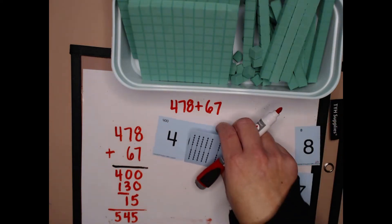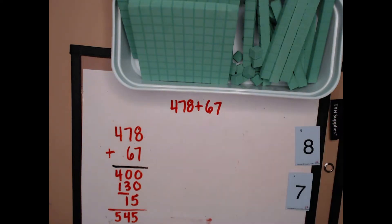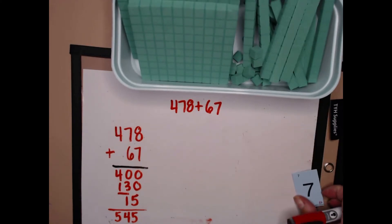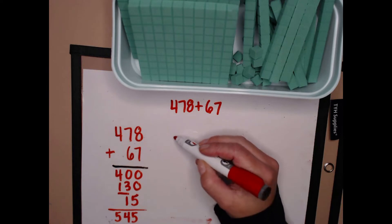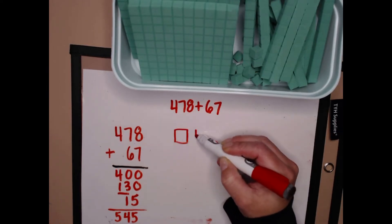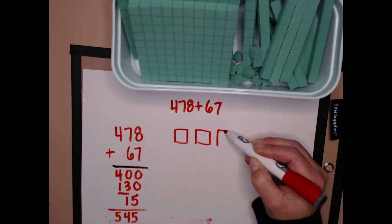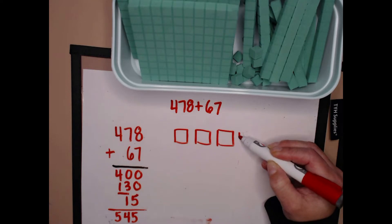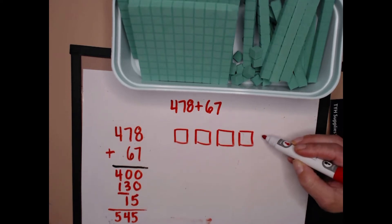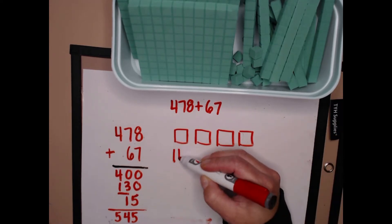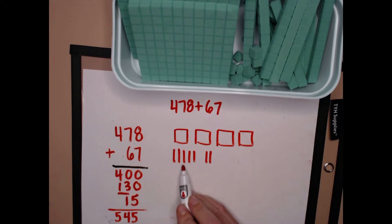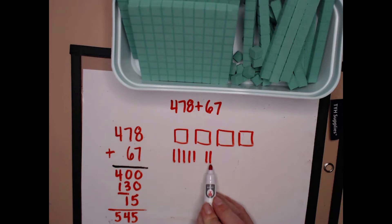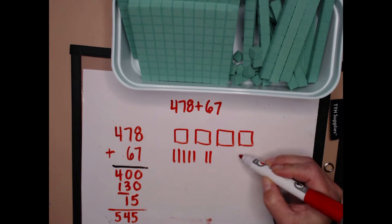Next I'm going to do a proof picture. I have four hundred seventy-eight. I have four hundreds, seven tens — notice I did five tens and then I pause, give a space, and two more tens — and eight ones.